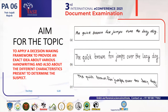The aim of this topic is to apply a decision-making framework to provide an exact idea about various handwriting characteristics present to determine the subject. Three different types of handwriting samples are examined to show how differences can be identified between them.